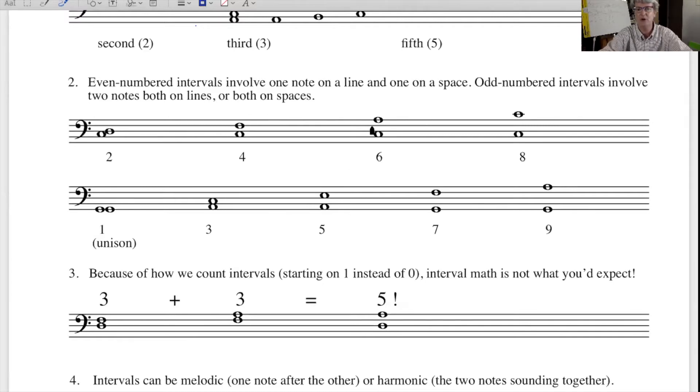Let's take one of these bigger intervals and count it out. This is a C. D would be two. E would be three. F would be four. G would be five. A would be six. This is a sixth.